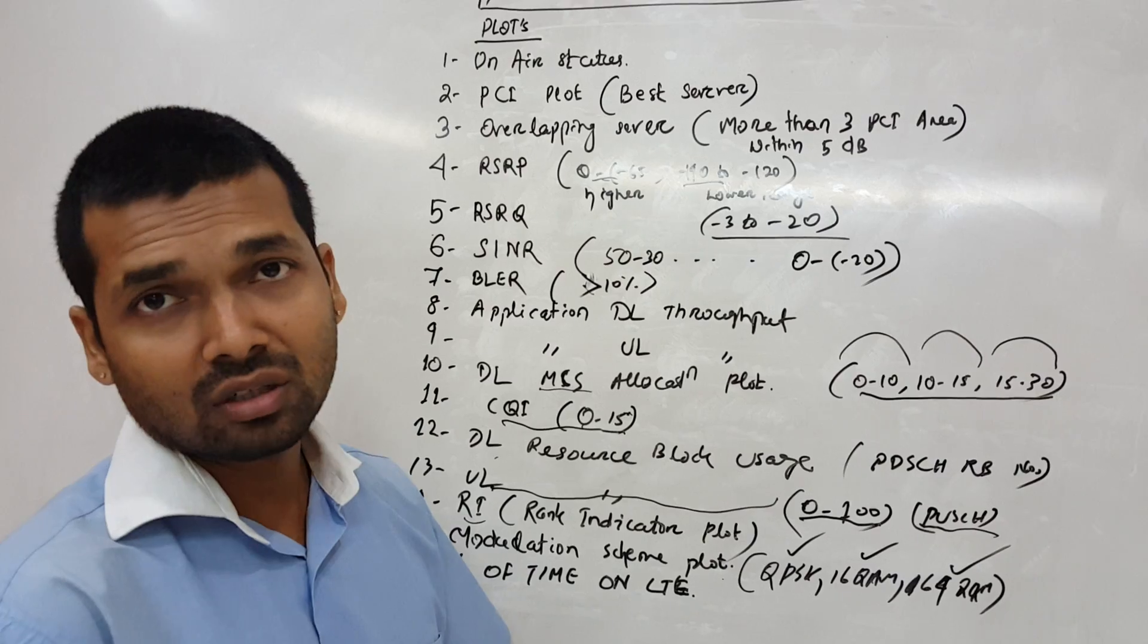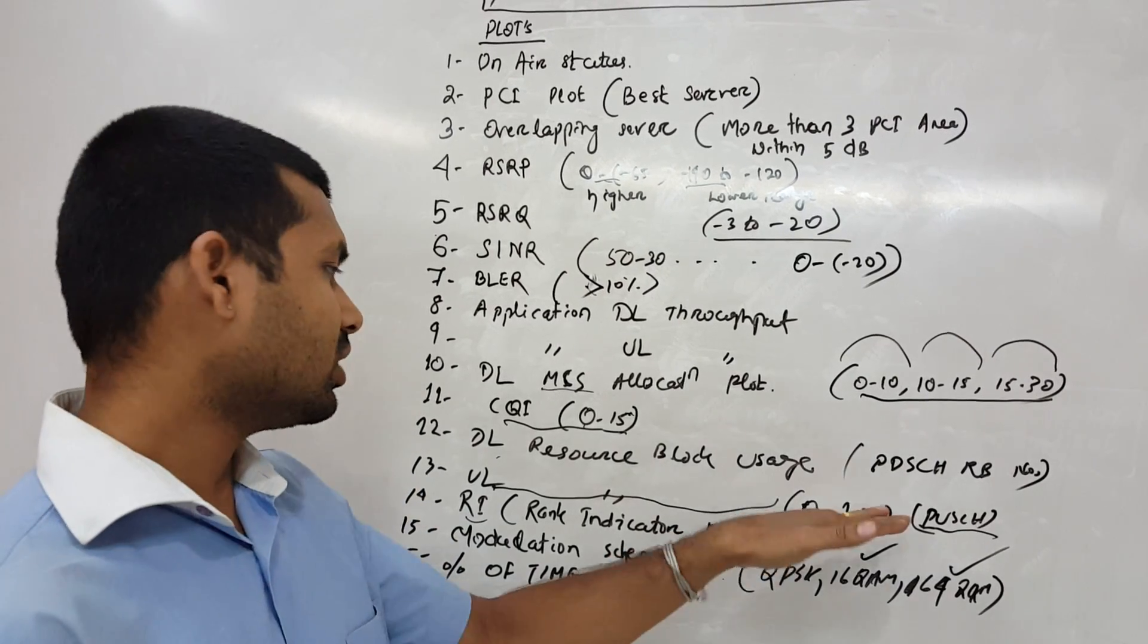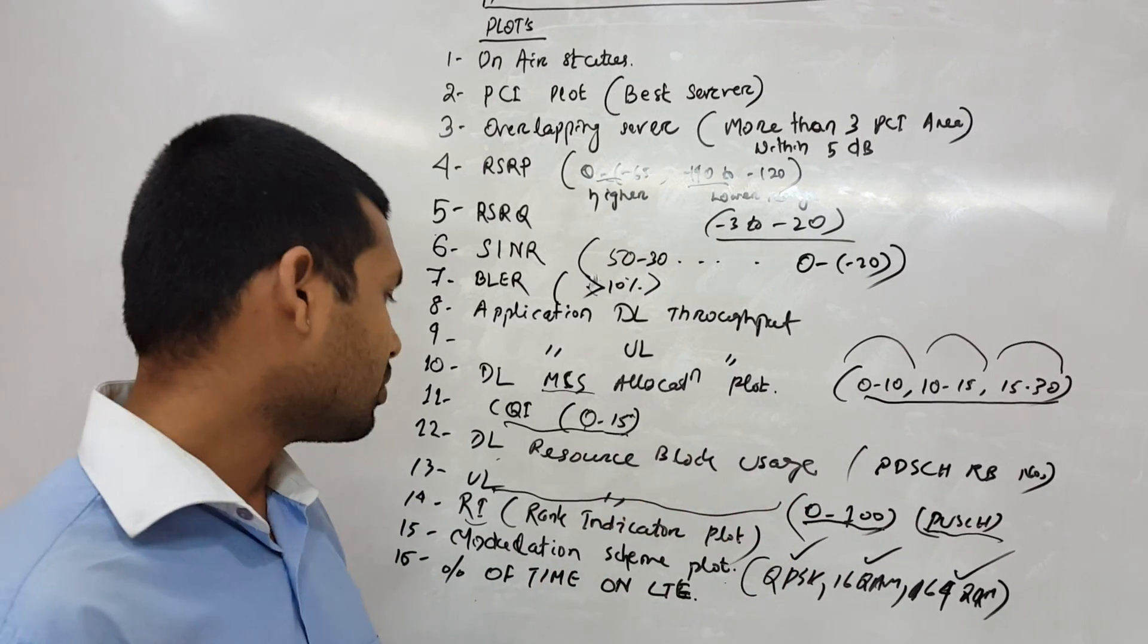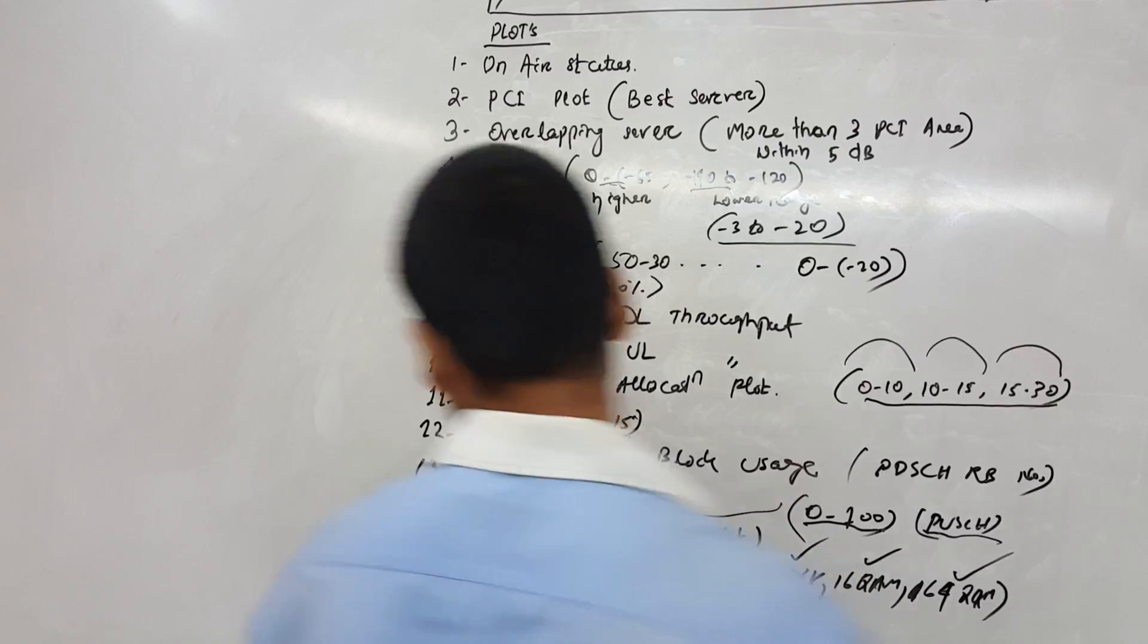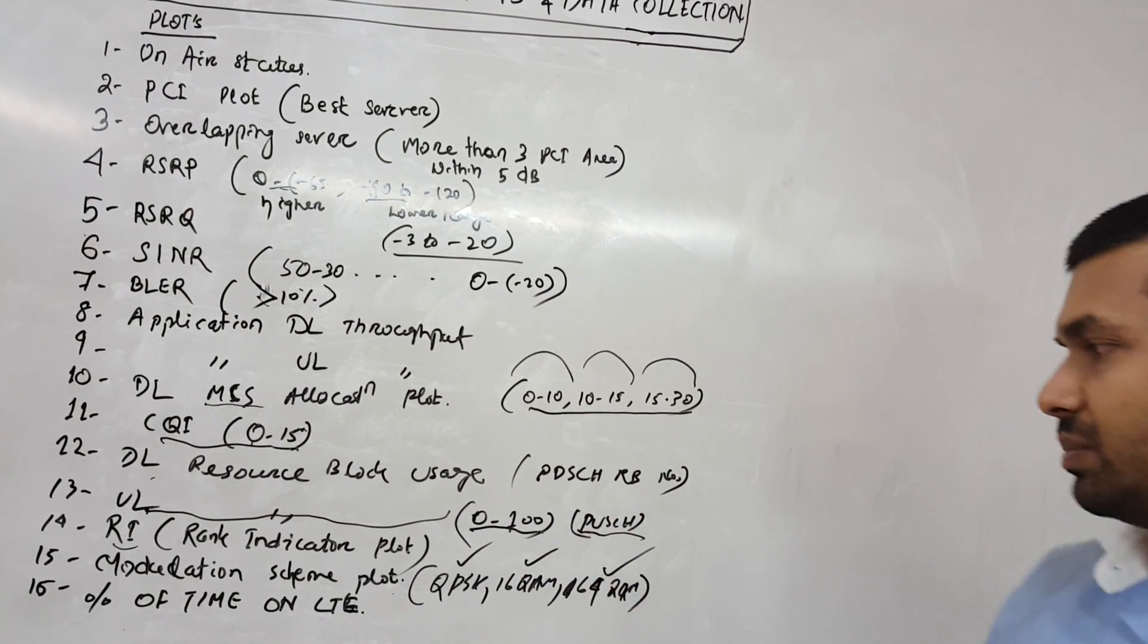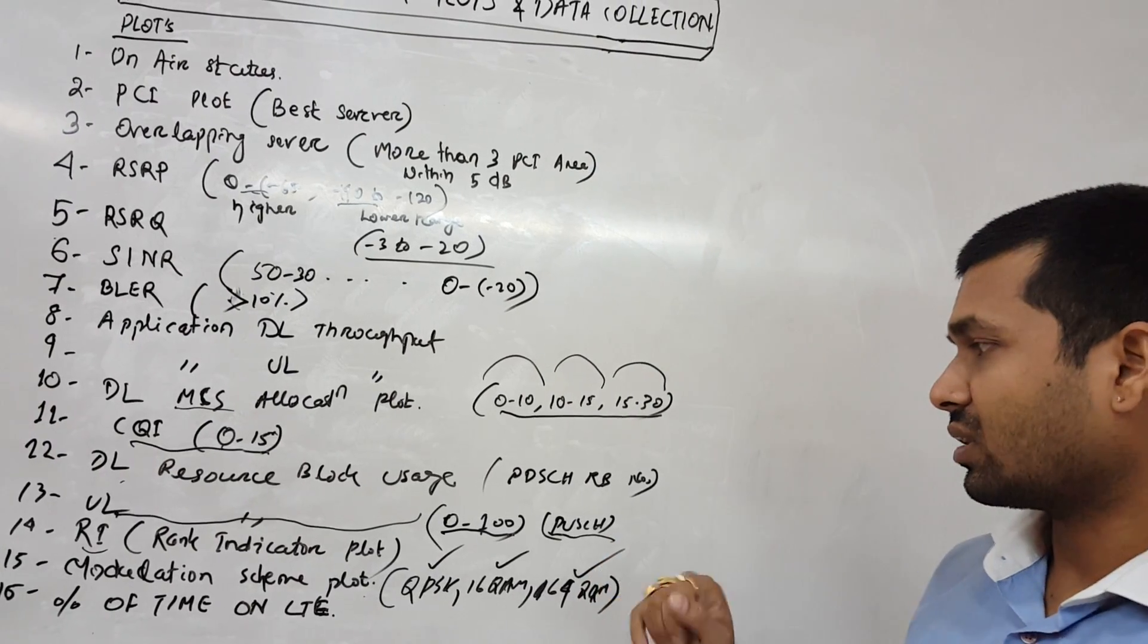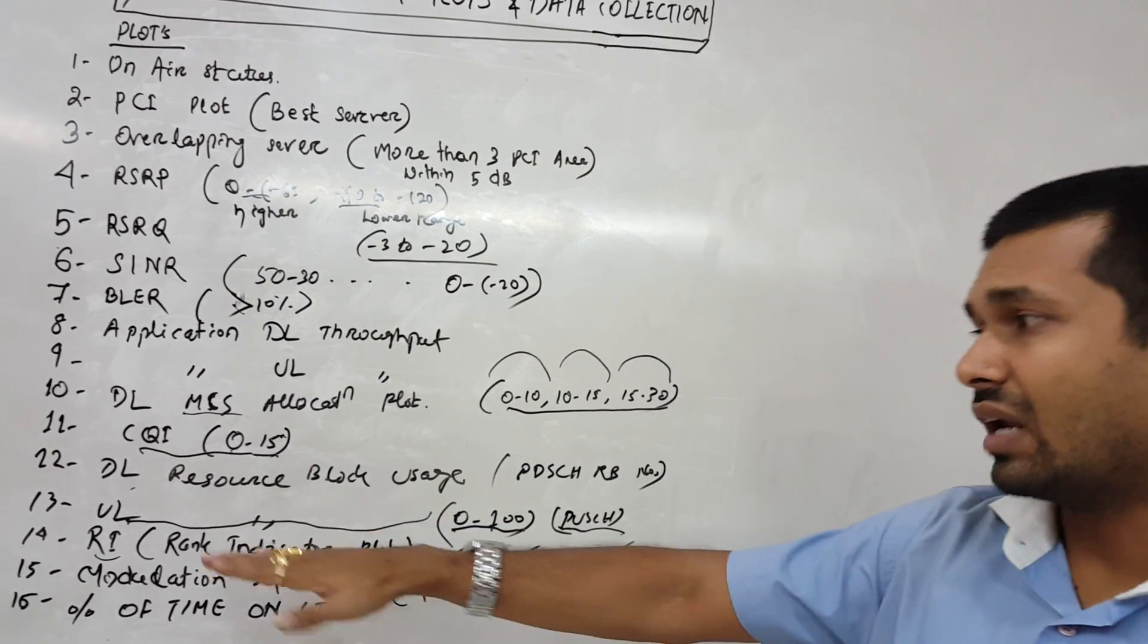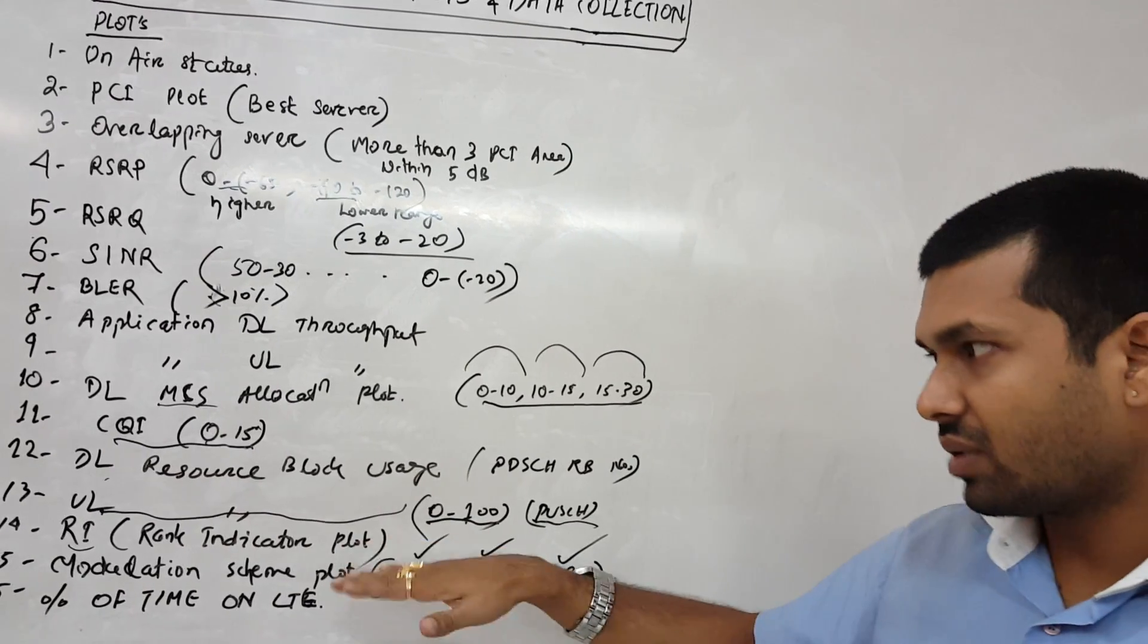Then we have uplink resource block usage - that is PUSCH resource block. Then rank indicators, we should have a rank indicator plot.